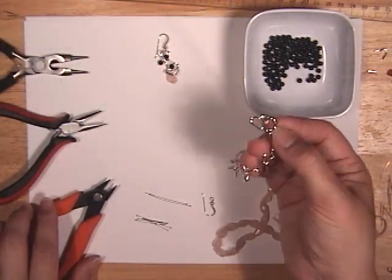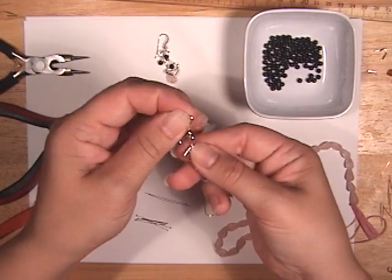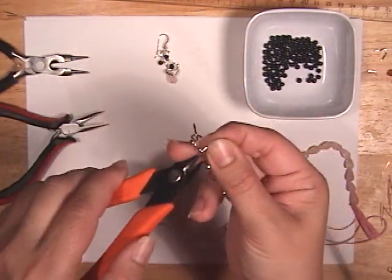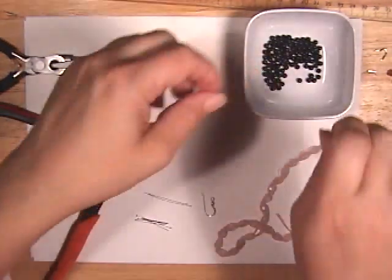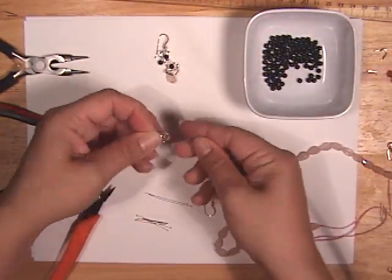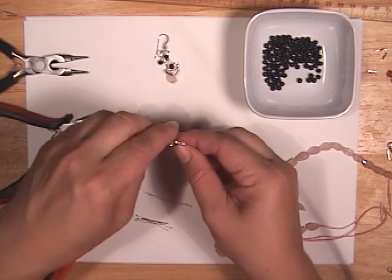First thing we want to do, we want to take our chain, and we're going to need three links out of this heart chain, so we'll go ahead and give it a snip, and there's our three links. Got a little bit of extra silver there.